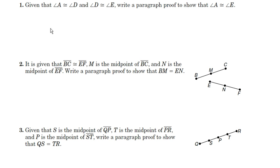For number one, we're given that some angle A is congruent to angle D, and angle D is congruent to E. Write a paragraph proof to show that angle A is congruent to angle E.